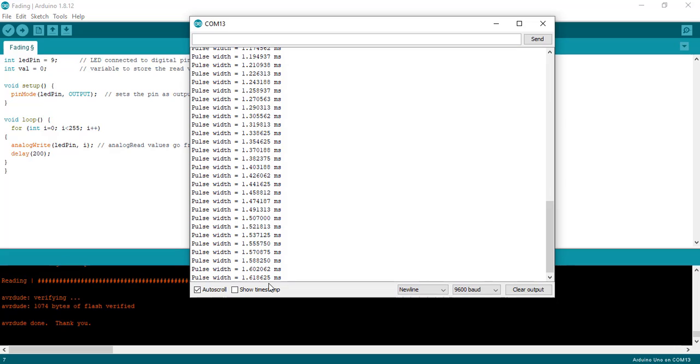You will also note that after 2ms, it starts to display from 0ms, because the maximum time period of Arduino default PWM signal is 2ms.